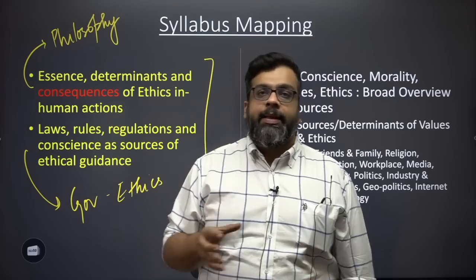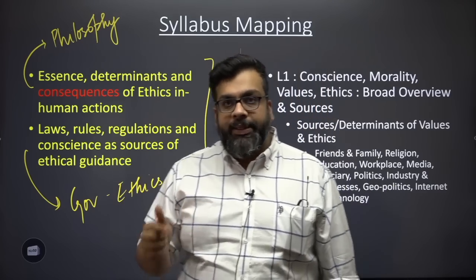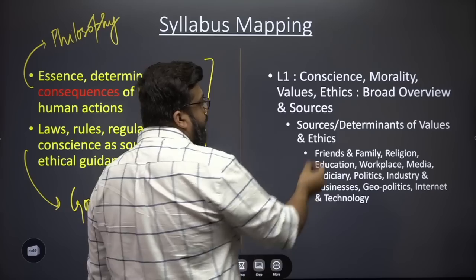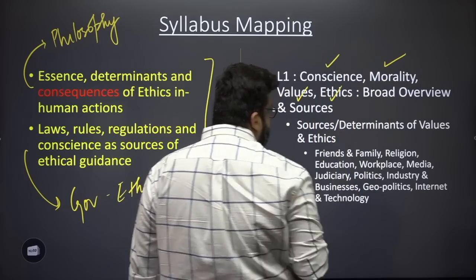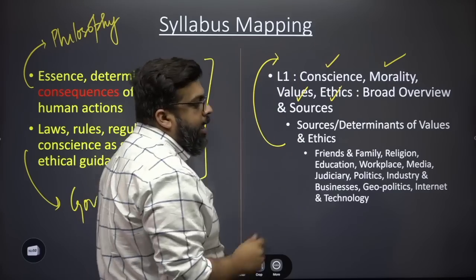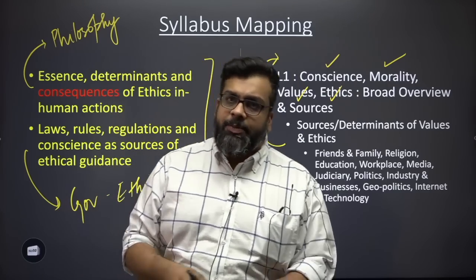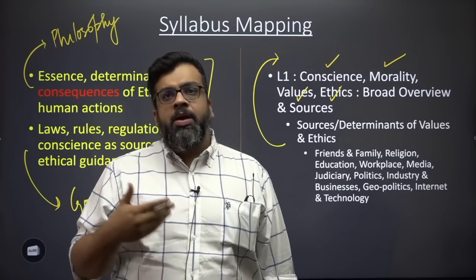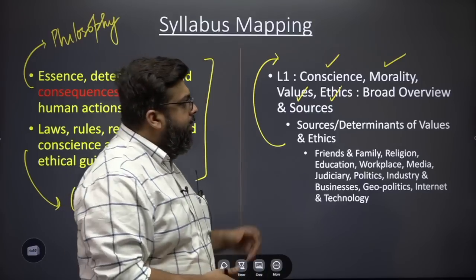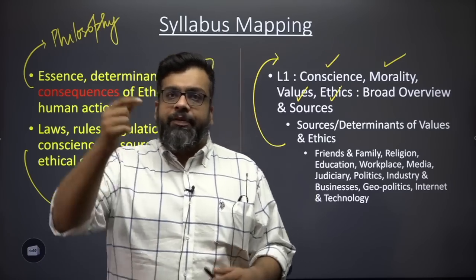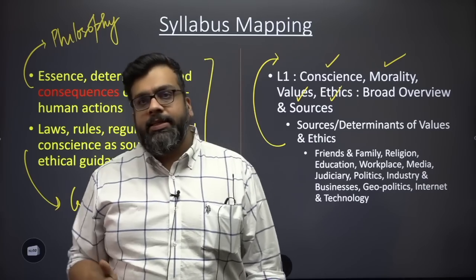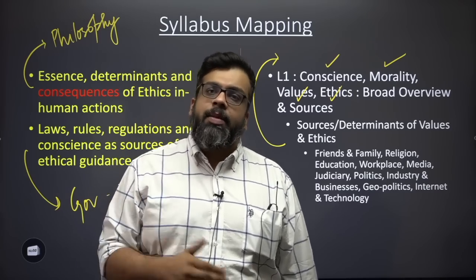I have restructured this by covering four basic key terms: conscience, morality, values and ethics. We'll do a broad overview of these terms and their determinants — what makes us moral, what makes us ethical, what makes us legally compliant and so on. The most systematic way to do this is to go through previous year questions, a practice you must apply while studying all General Studies papers regardless of subject.